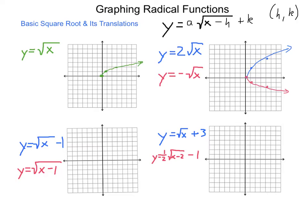Now let's do some horizontal and vertical translations. For y equals the square root of x minus 1, because this minus 1 is outside of the radicand, it has a vertical effect like the k in our parent function. So we start at 0, negative 1 and follow everything else the same: movement of 1,1 then 4,2, then 8,3. We end up with a graph shifted downward by 1.